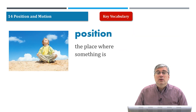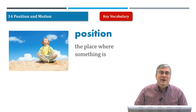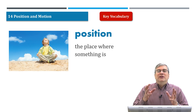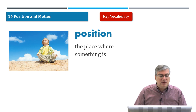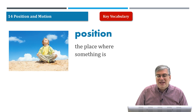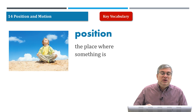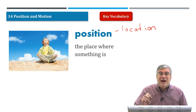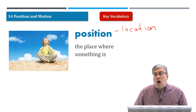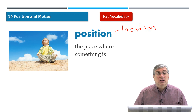We begin with the vocabulary, and the first word is position. This is a good place to begin, because we talk about where things are — where are objects or people? In this case, we have a boy. What is his position? Where is he located? Position and location mean the same thing — the place where something is. The boy is on the hill, for example. That is his position, that is his location.